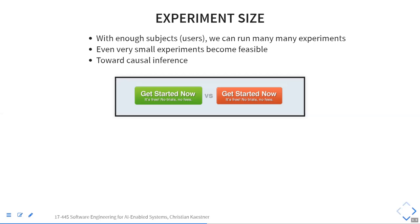In practice, many people don't do power statistics. They just run an experiment and see in a dashboard whether results are significant or not. If they're not significant, they run it longer. If it's still not significant, they give up at some point. That's the more pragmatic approach.